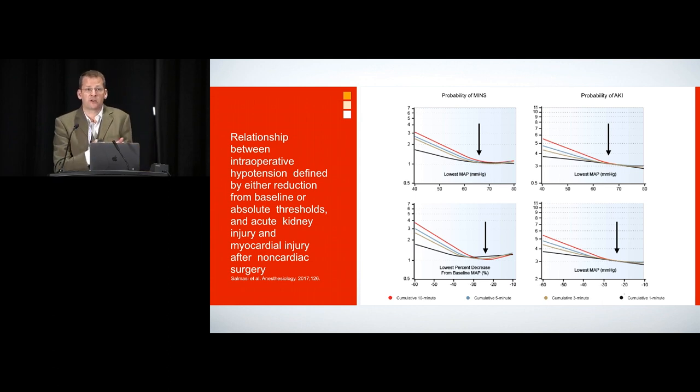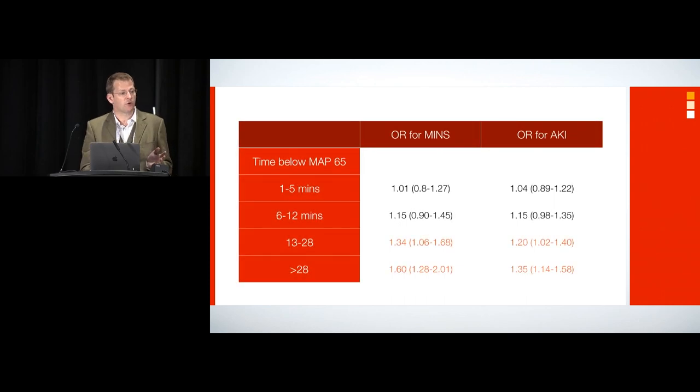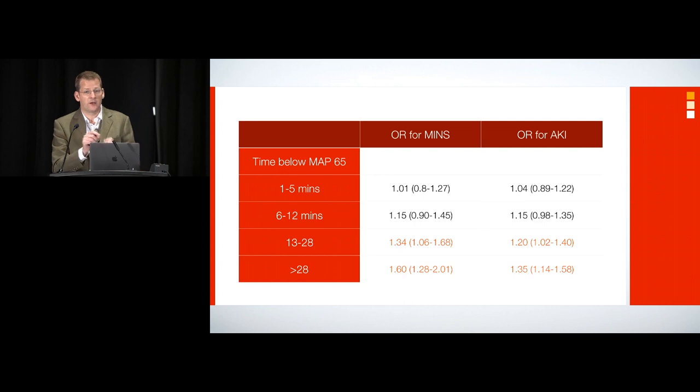So they took this figure, this magic figure of 65, and they applied different quartiles of time spent below it. And if your blood pressure was less than 65 for a cumulative duration of 13 minutes or more, okay, so this could be 13 one-minute episodes, or it could be two six-and-a-half minute episodes, then that's when your risk started to increase. And what's interesting in this paper is that a third of the hypotension was between induction of anesthesia and knife to skin. That's anesthetic hypotension. That is down to us. We have to take responsibility for that.